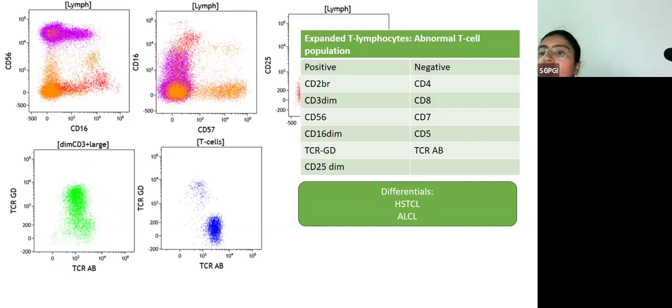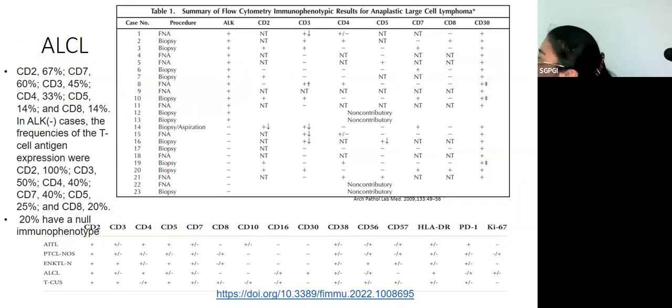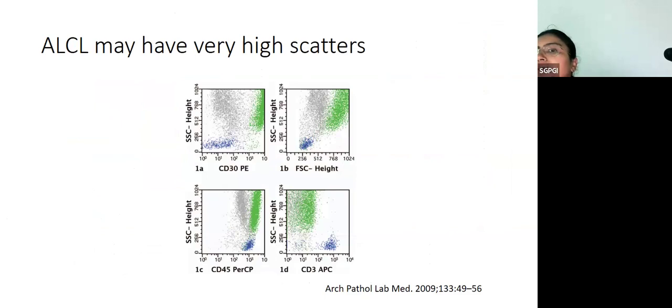Differentials: gamma delta T-cell lymphoma, blastoid morphology is hepatosplenic T-cell lymphoma. However, HSTCL usually have a brighter CD3 expression than the normal T cells. The other lymphoma that we can have is anaplastic large cell lymphoma. The IHC was done on the bone marrow in this case. It came out positive for CD30 and ALK1. The final diagnosis given was ALCL, ALK1 positive. Remember that for ALCL, you can have a situation where 20% of the tumors may not express any of the T-cell antigens. They can also be CD45 negative. Sometimes when you start doing a T-cell lymphoma, you gate only on the CD45 positive cells, leaving the CD45 negative cells behind. The other thing to remember is that anaplastic large cell lymphoma may have very high scatters.